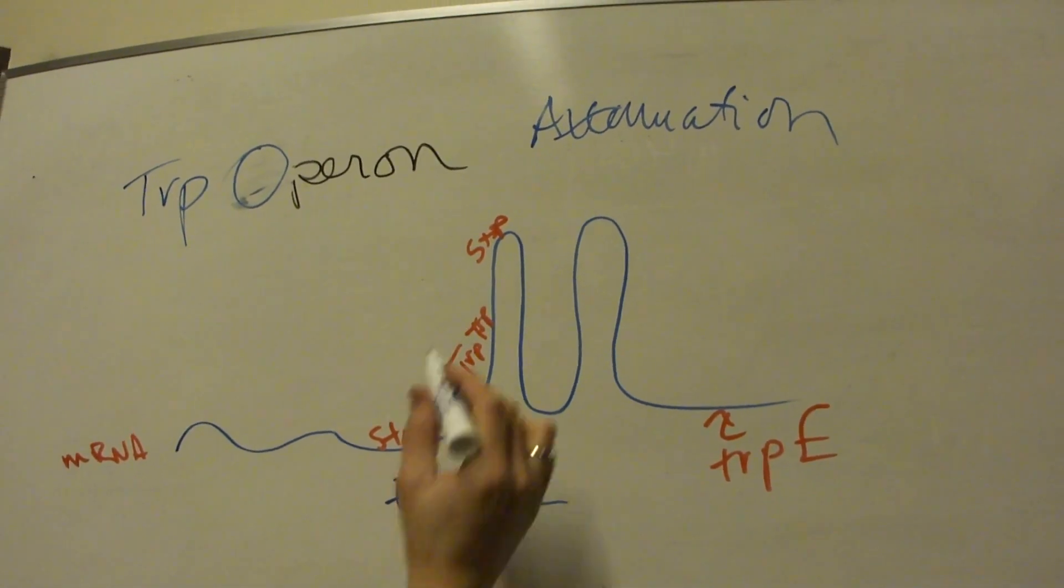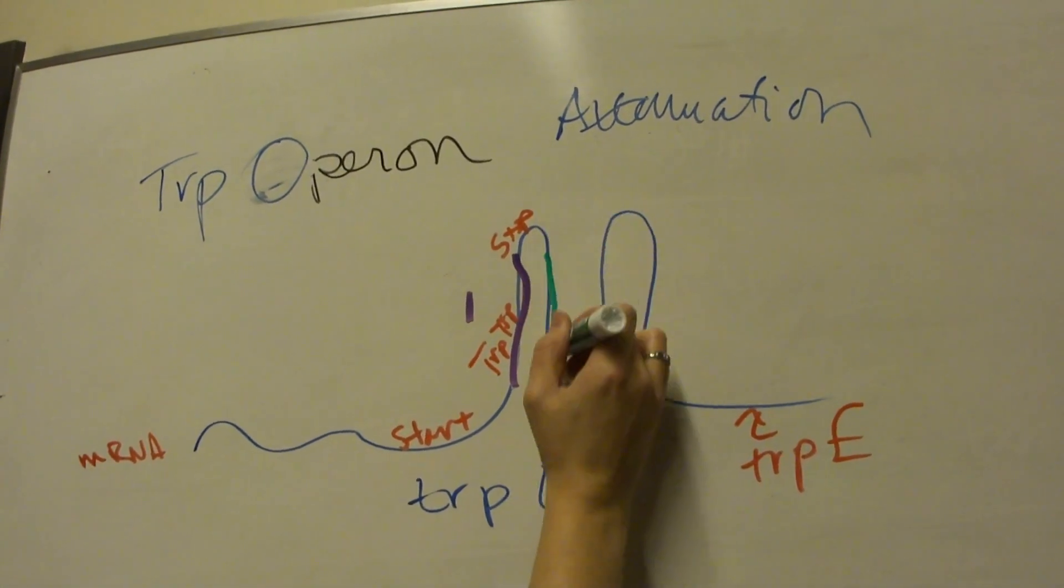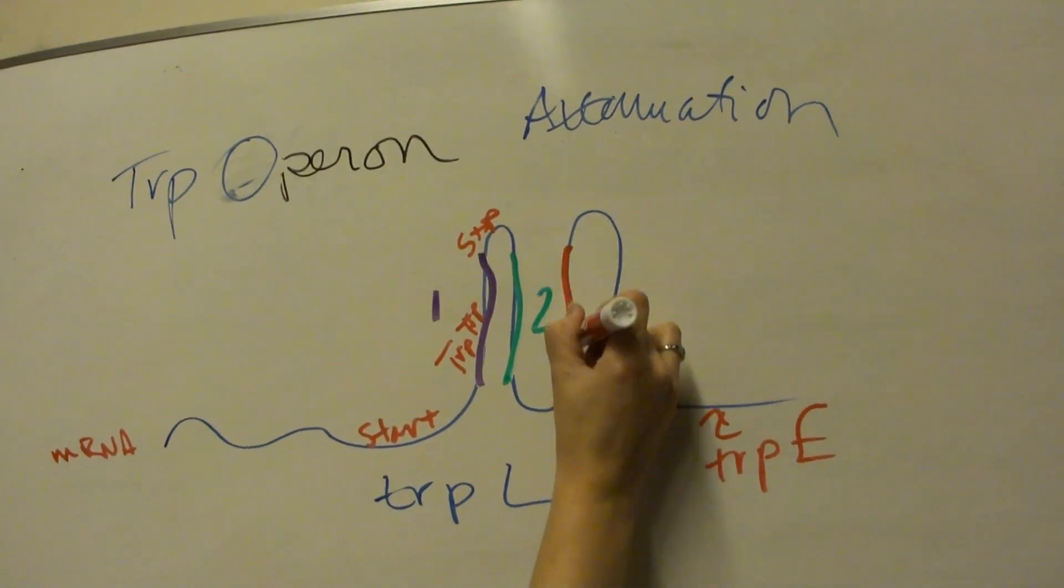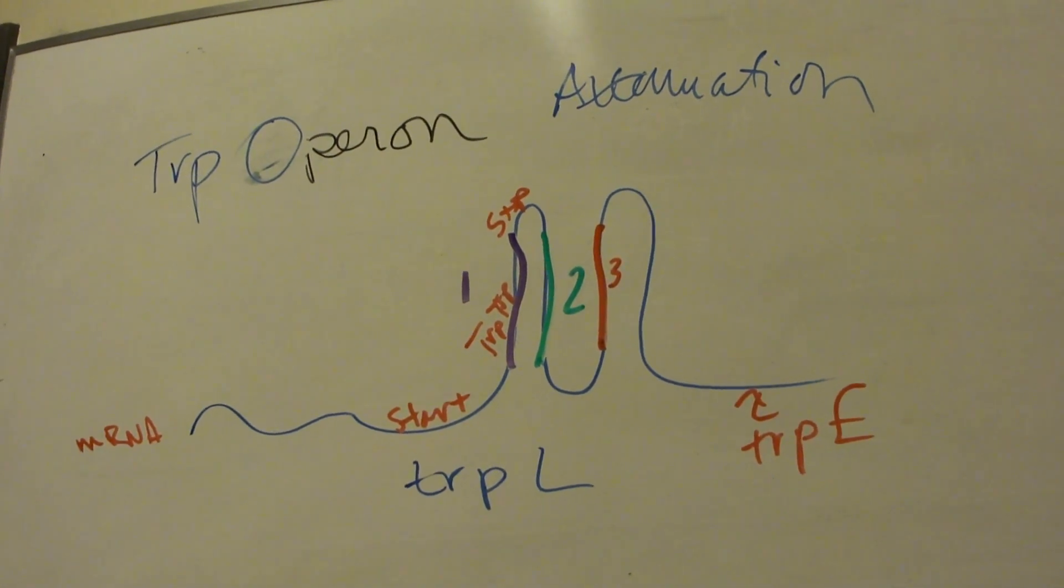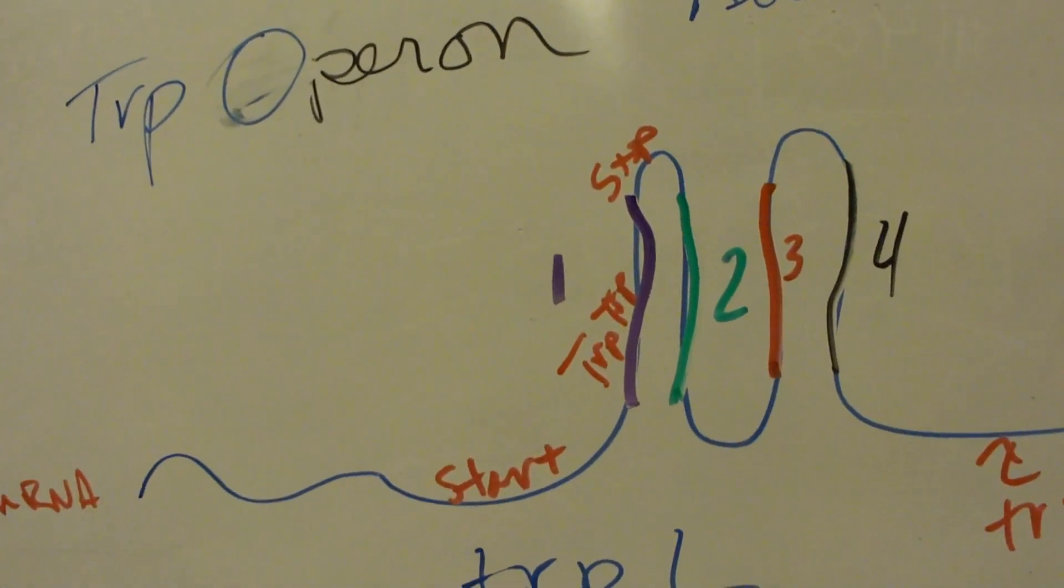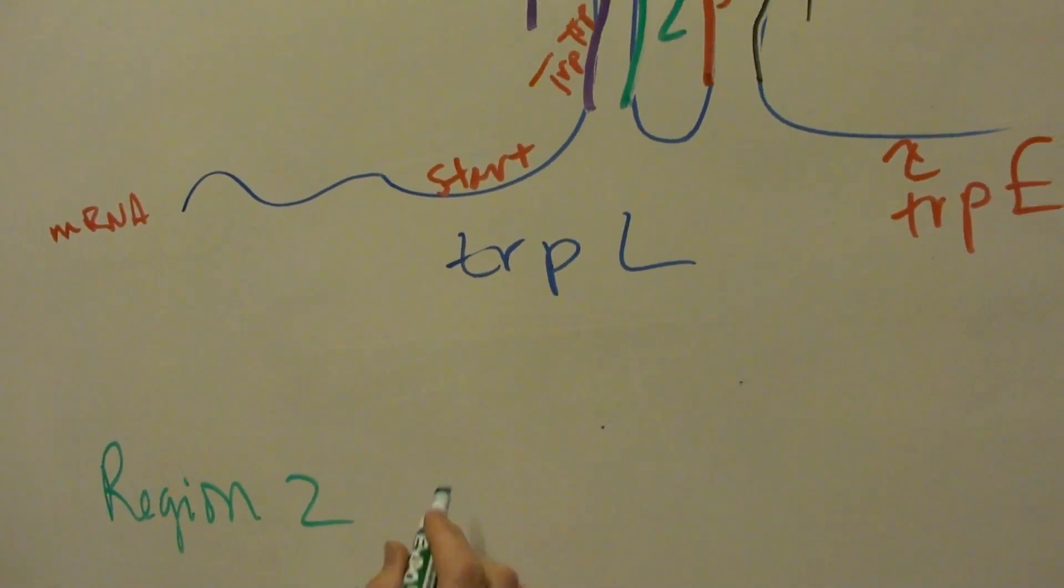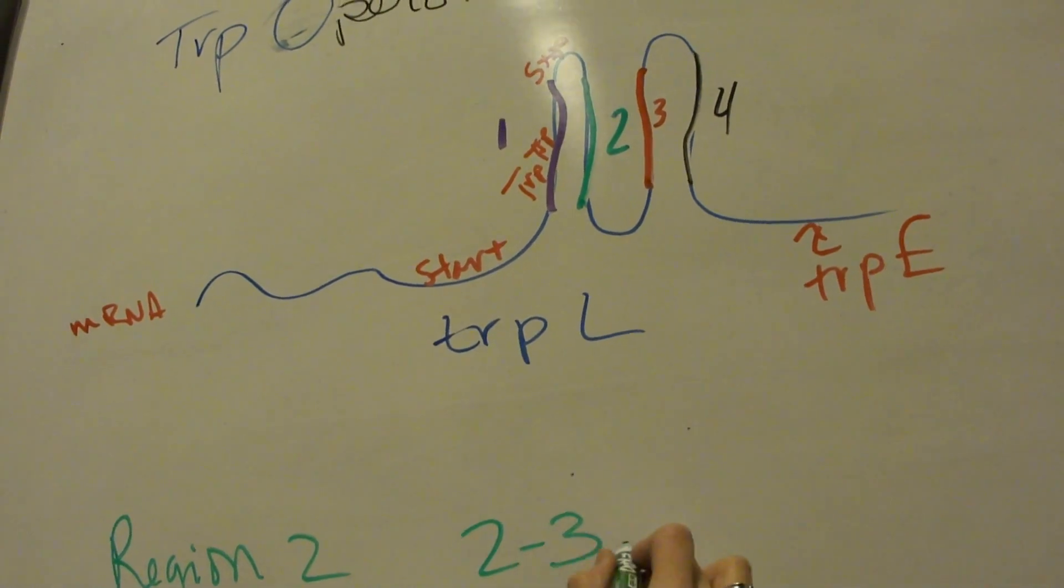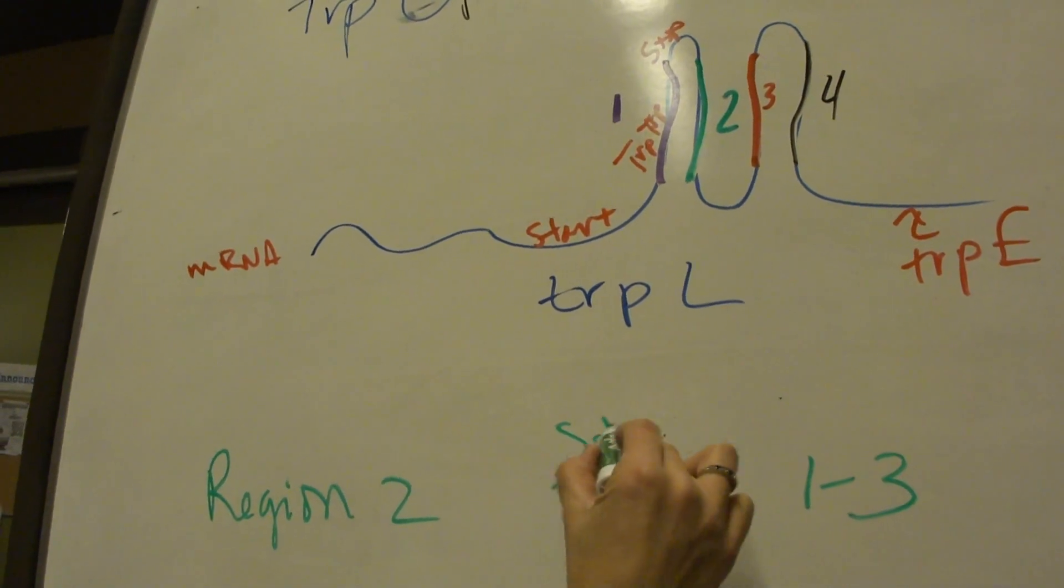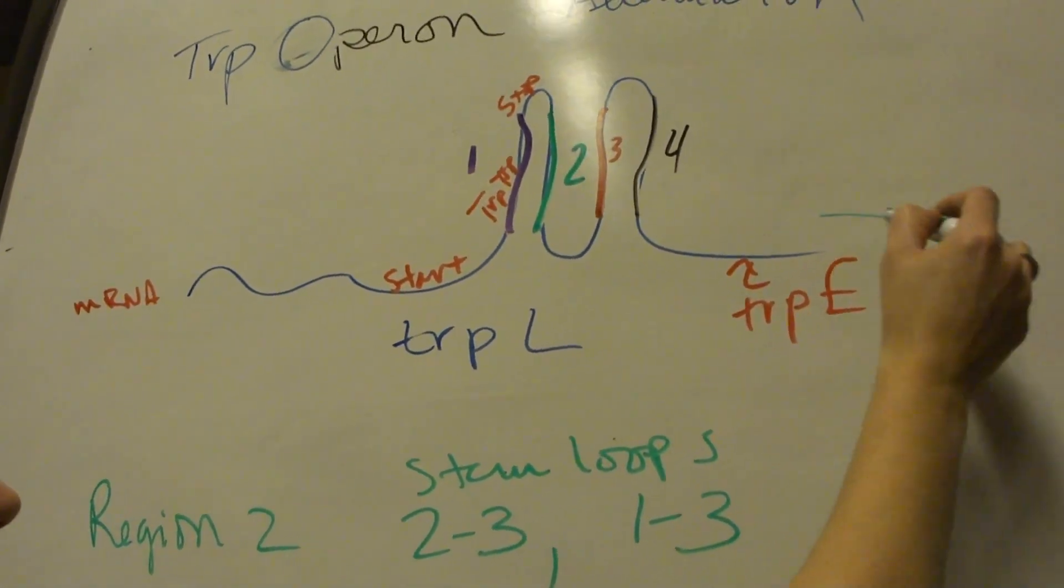So you have these different regions. This region here is region 1, region 2, region 3, and region 4. Region 2 can form or is complementary to both region 1 and region 3, so you can get stem loops.